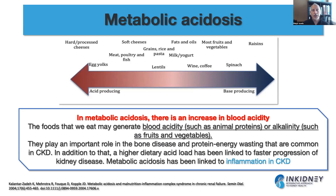Another cause of inflammation in chronic kidney disease is metabolic acidosis, which describes a state of increased blood acidity — not stomach acidity, but blood acidity. The food we eat generates blood acidity through metabolism. Eating a lot of animal protein can produce high blood acidity, while fruits and vegetables produce alkalinity and counteract it. High blood acidity plays an important role in bone disease and protein energy wasting common in CKD, and the higher the dietary acid load, the faster the progression of kidney disease. Metabolic acidosis has been linked to inflammation in kidney disease.